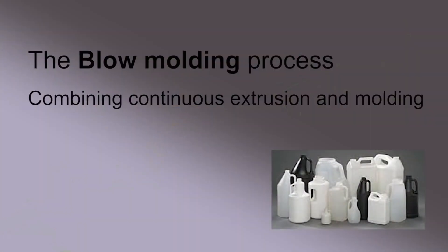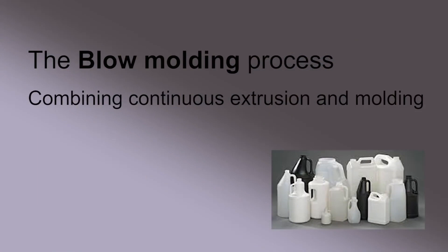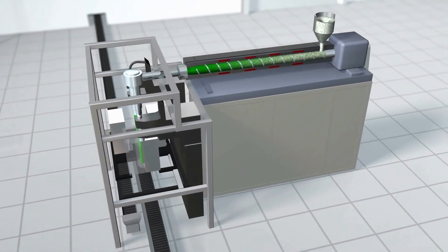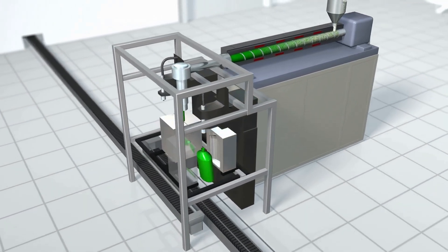There are many variations to the extrusion process, but a mixture of extrusion and molding is found in the blow molding process, where plastic is continuously extruded into a tube shape and then clamped in a mold and blown into its shape with compressed air.